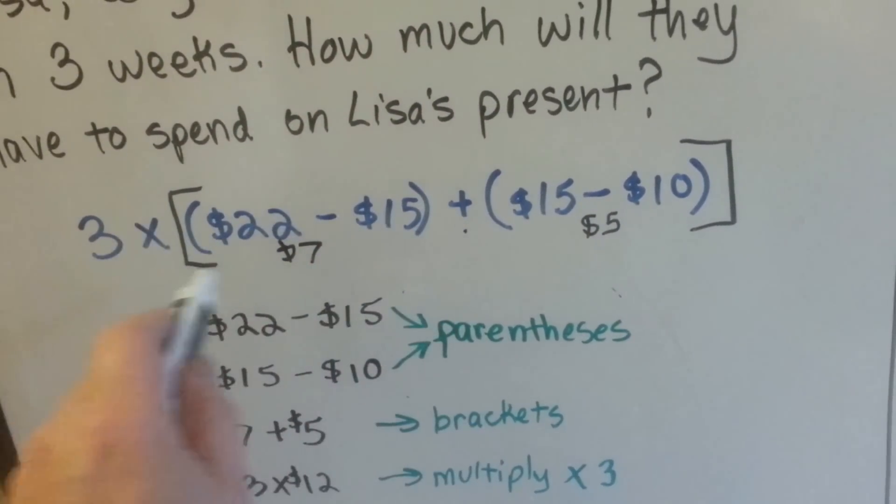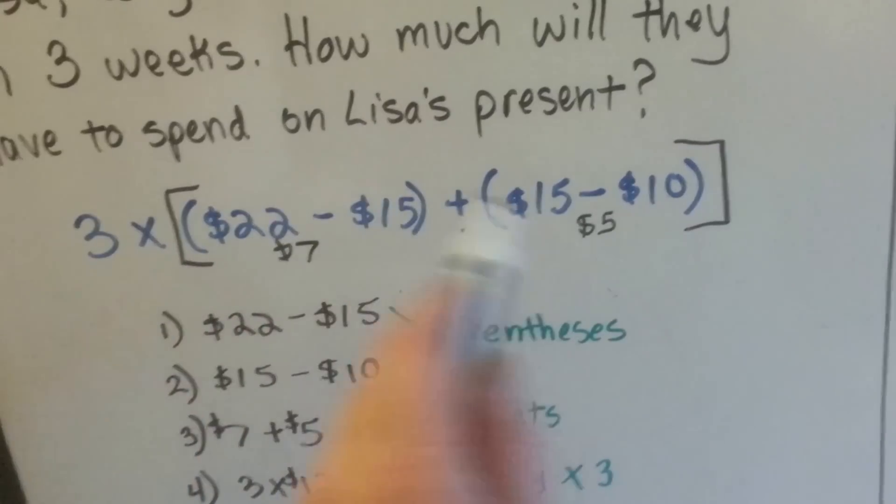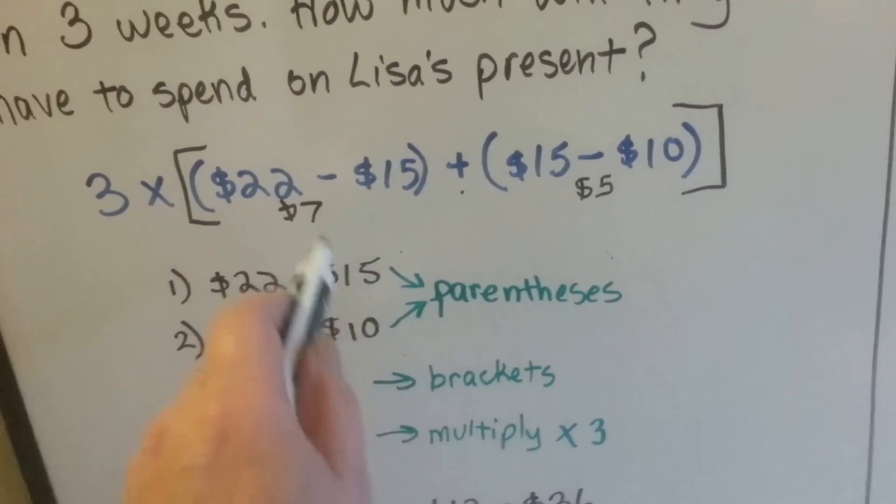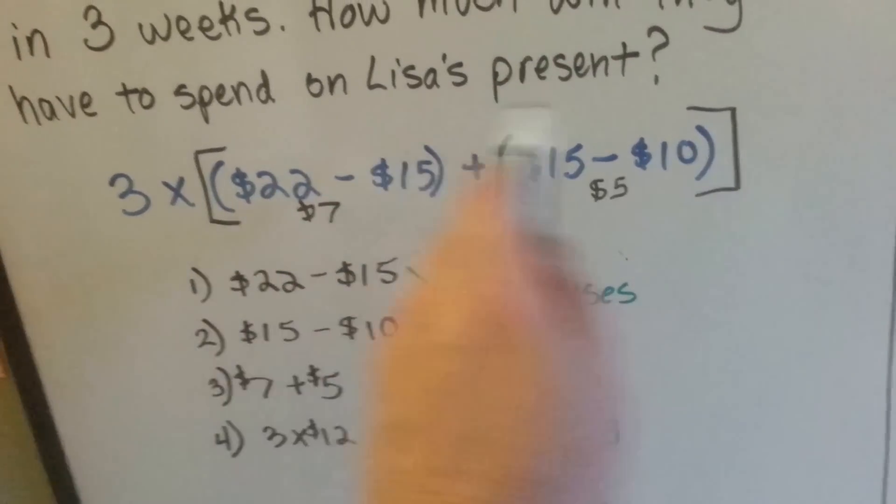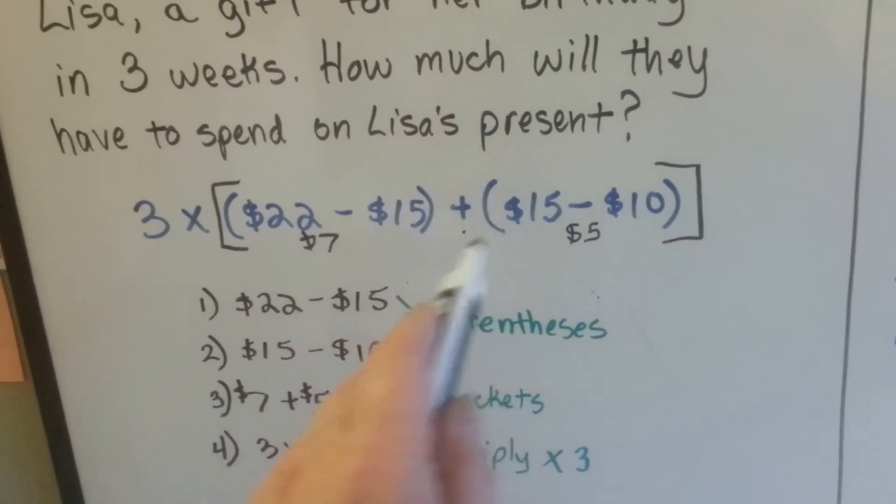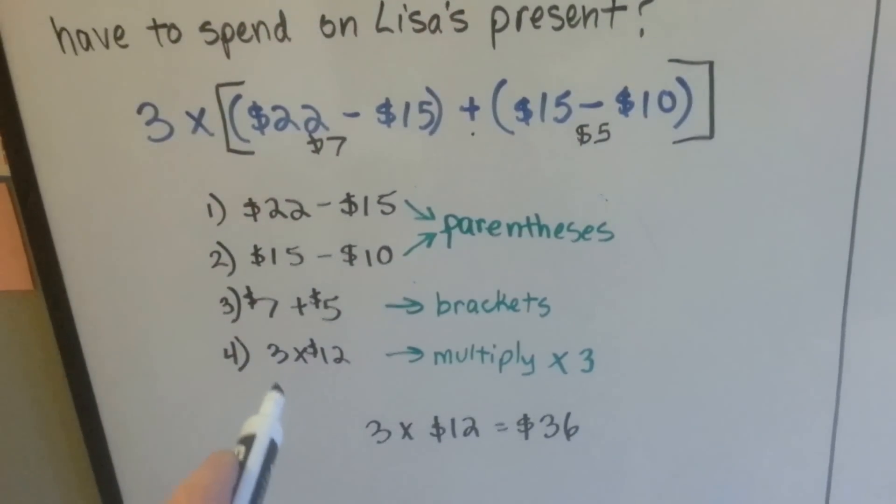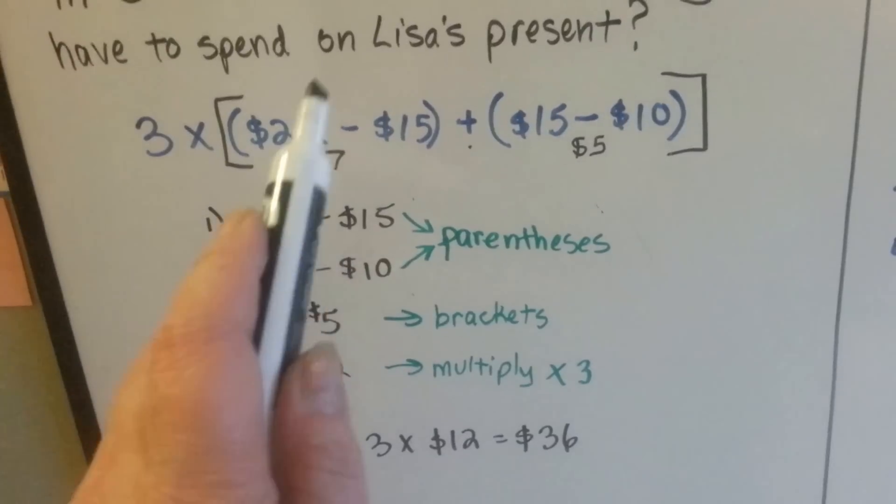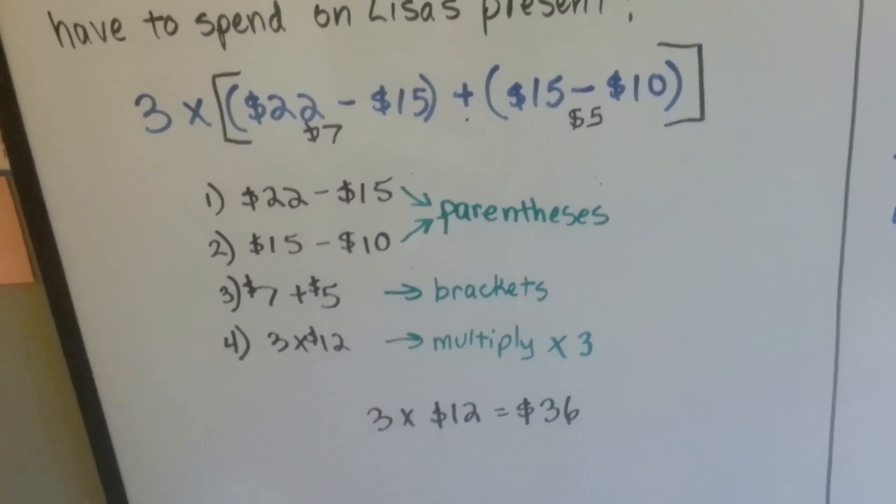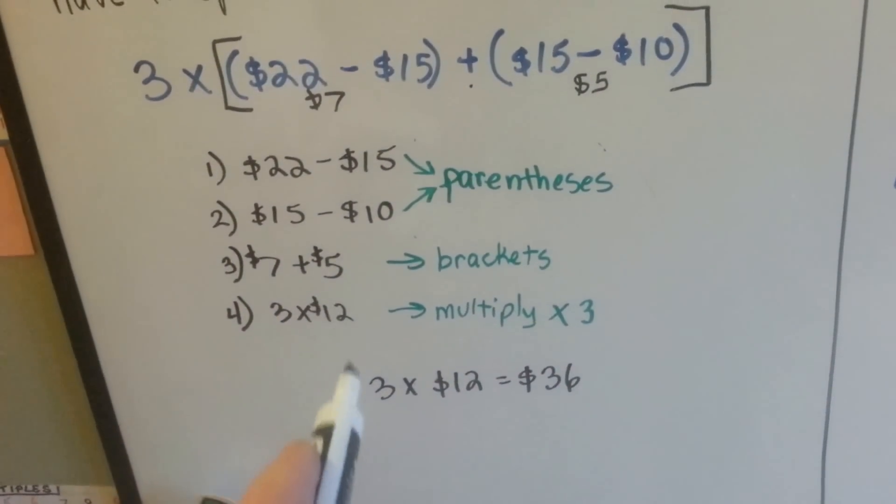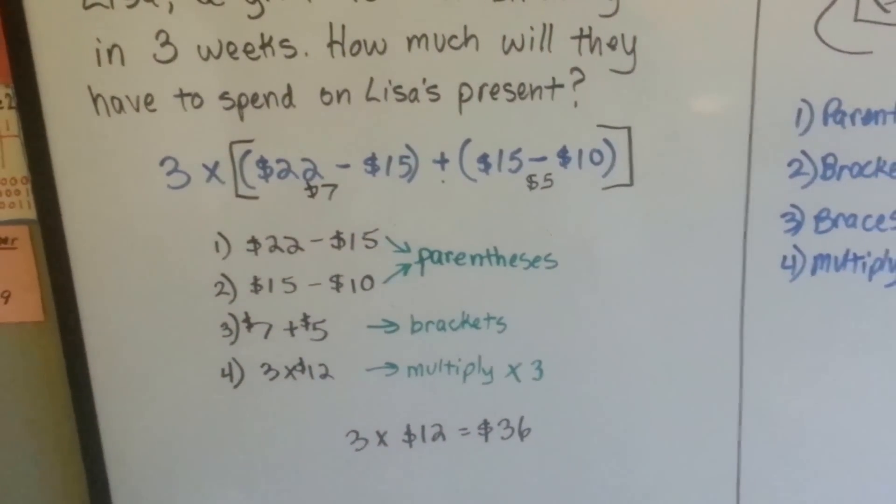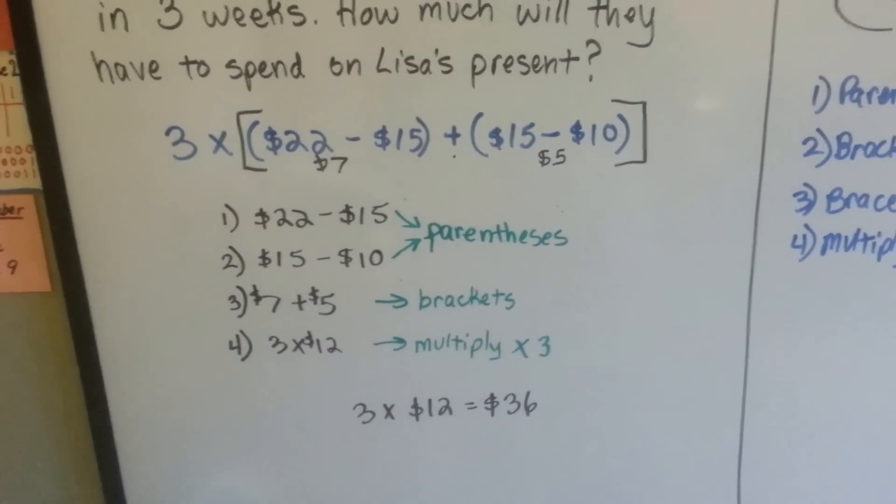Now we need to add them together, because now we're going inside the brackets. We did inside the parentheses, now we're going to do inside the brackets. $7 plus $5 is $12. So now we know everything inside of here equals $12. And now we know they've got three weeks to save, so we need to multiply that $12 times 3. We did parentheses, then we did everything that was inside the brackets, which meant the addition right there. And now we're going to multiply. 3 times $12 is $36. Emma and Tala have $36 to spend on Lisa's present.